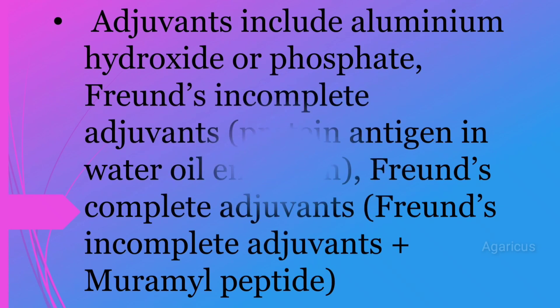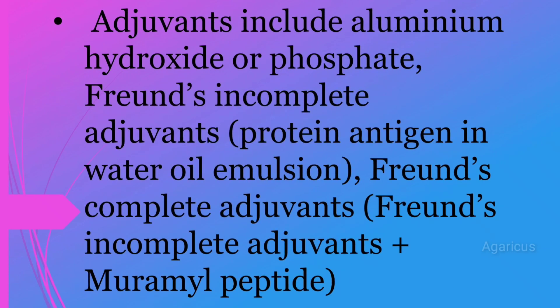Adjuvants include aluminum hydroxide and aluminum phosphate. Freund's incomplete adjuvant is made up of protein antigen in a water-oil emulsion. Freund's complete adjuvant is made up of Freund's incomplete adjuvant plus muramyl dipeptide.